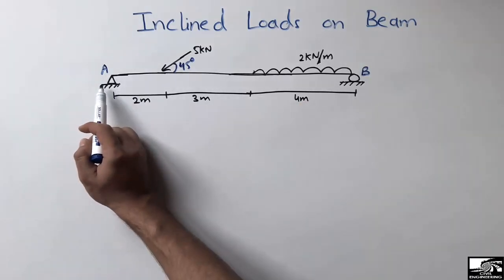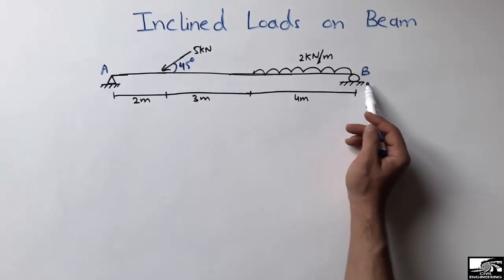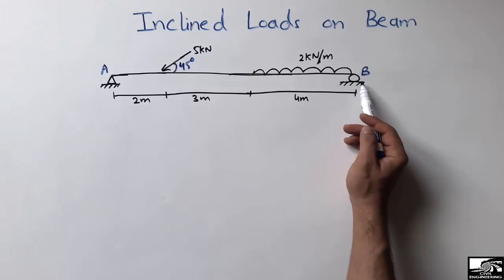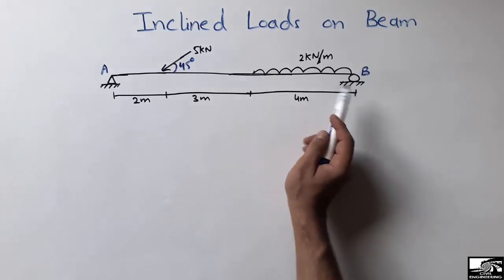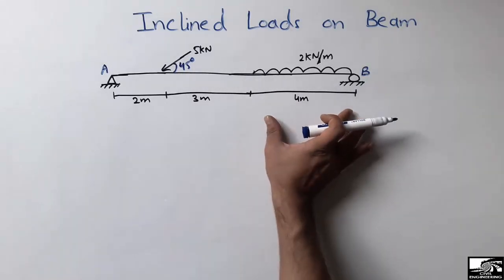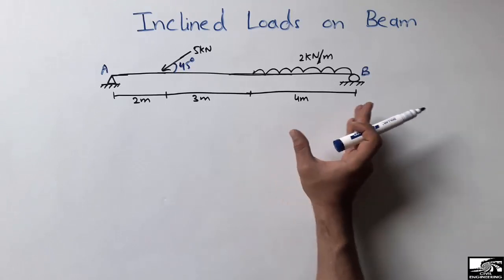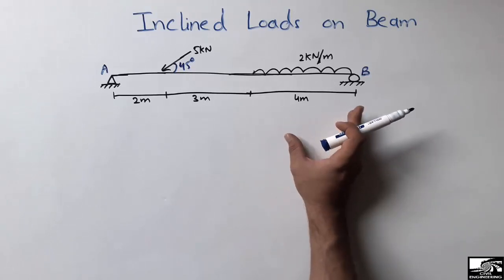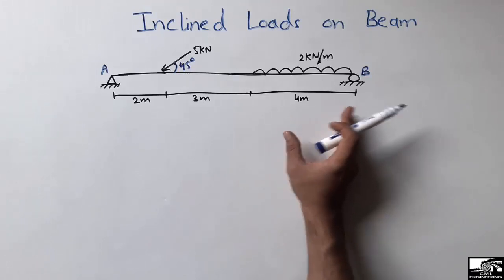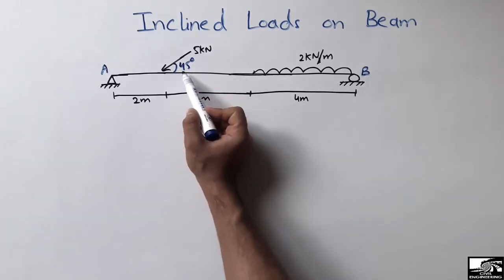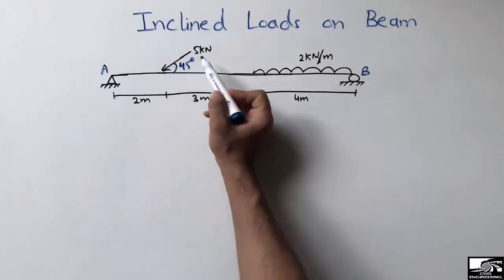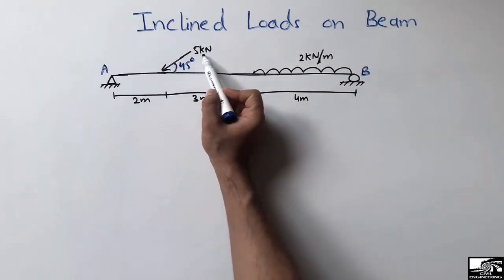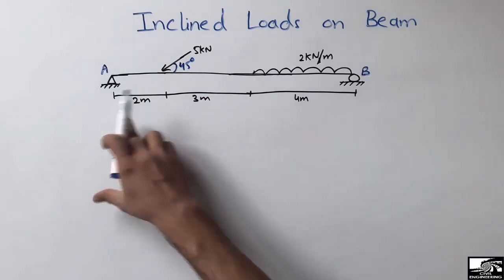Here is a simply supported beam with a hinge support at the left side and a roller support at the right side. There is a uniformly distributed load acting over a length of 4 meters at the right side of the beam, while an inclined load acts at an angle of 45 degrees on the left side with a magnitude of 5 kN.